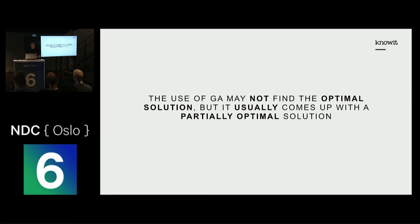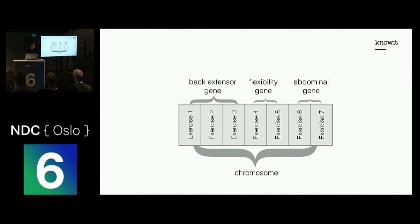The solution part in my case base is exercise plans. I had to map these to a chromosome to make them fit with genetic algorithms. Here you have an example of an exercise solution — it consists of seven exercises, and of course they have a lot more traits than just a name. This is just to show how it looks as a chromosome.